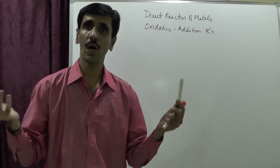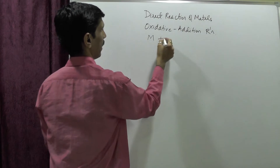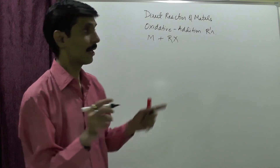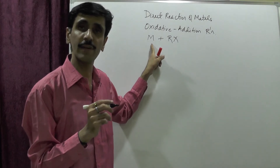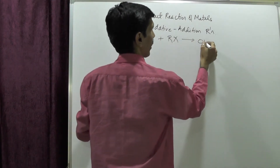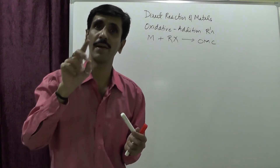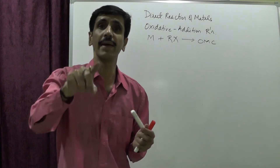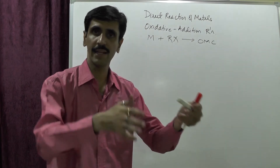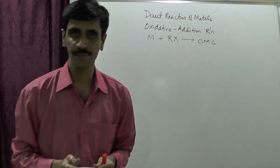So the general reaction is: a metal reacts with an alkyl halide — the metal has an affinity towards the halogen X — and as a result we get the organometallic compound. The exact formula of the organometallic compound depends on the nature of the metal, which I am going to discuss now.